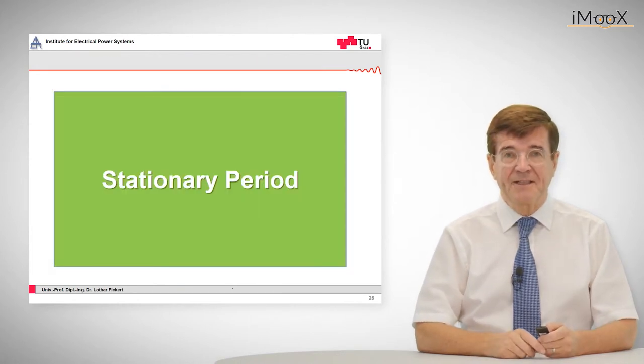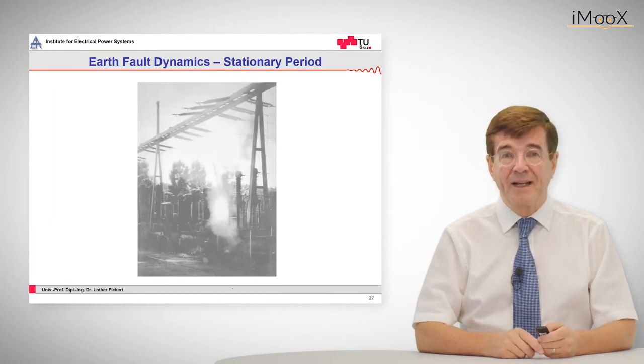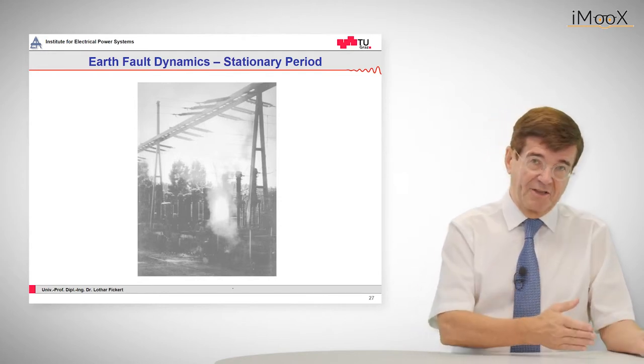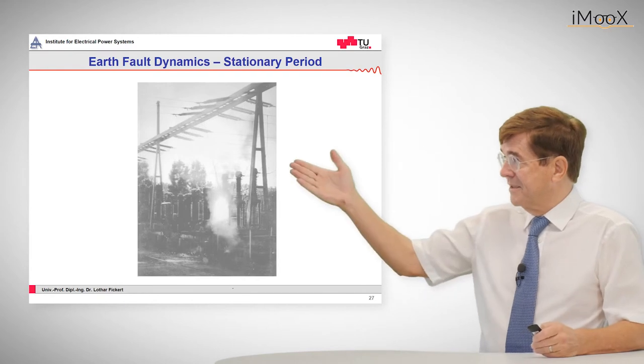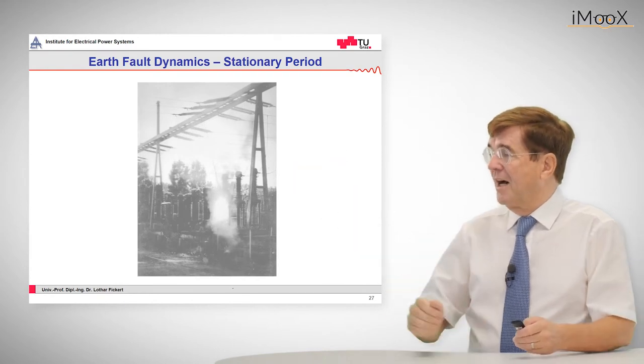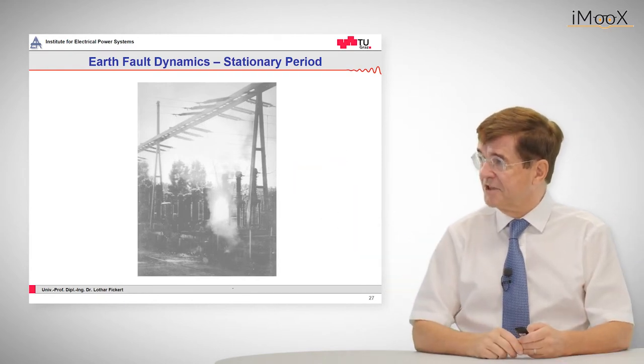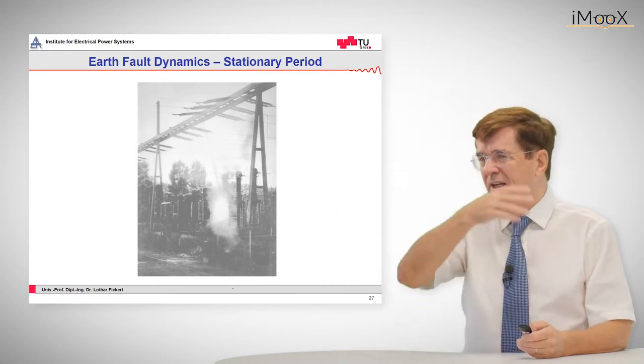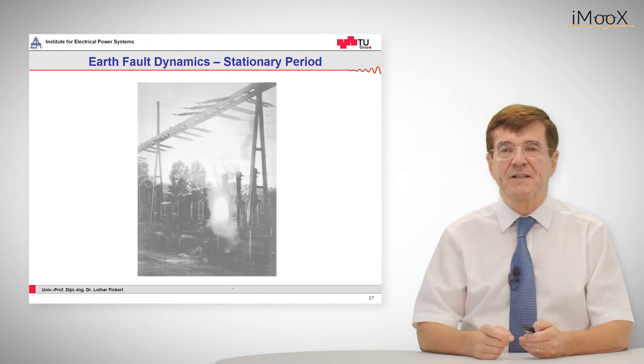So the stationary period is characterized by a very small fault current in contrast to solidly grounded systems. So here we can see a picture of an arc in a substation. And the question is, how does this current flow in a current loop? Because we need current loops.